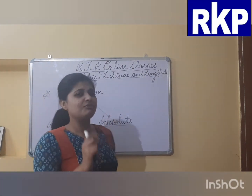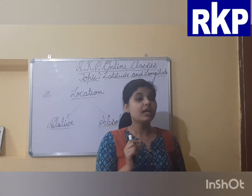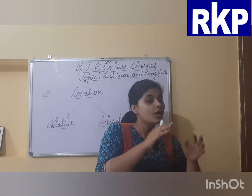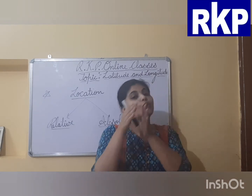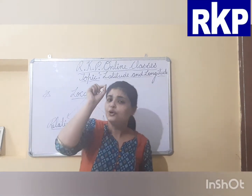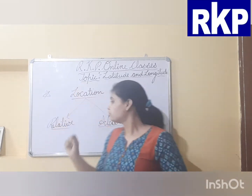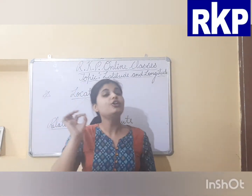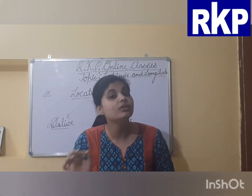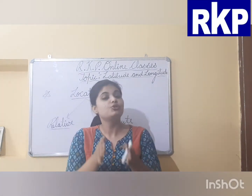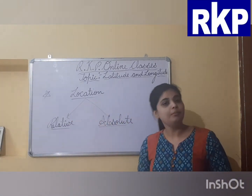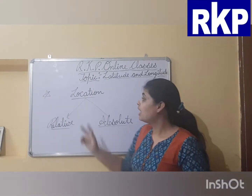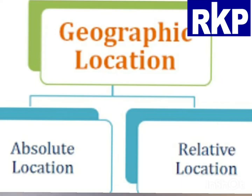Latitude lines and longitude lines both are imaginary lines which help us to find the absolute location of any place. The term location means the position of any place on the earth surface. And there are two types of location.